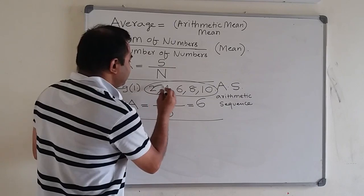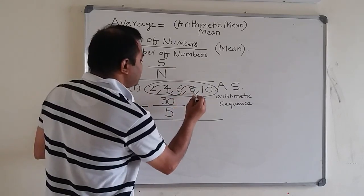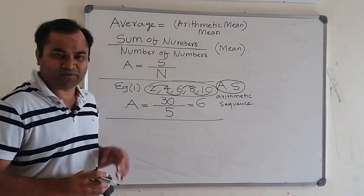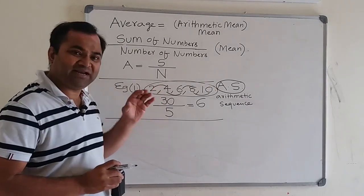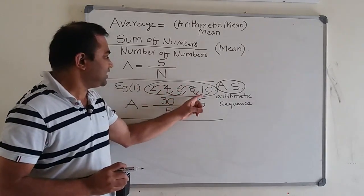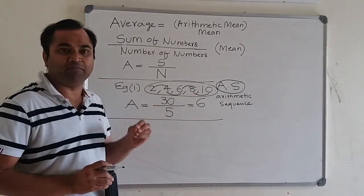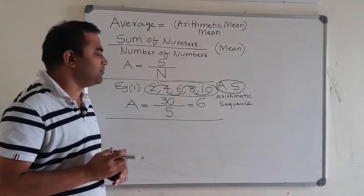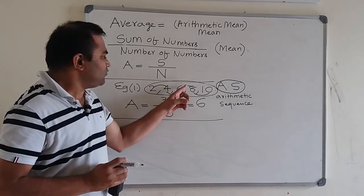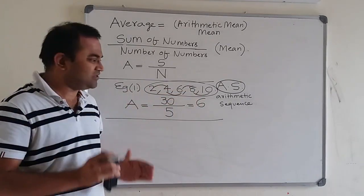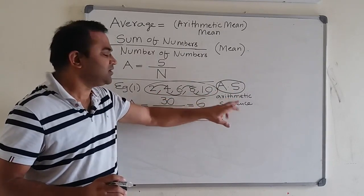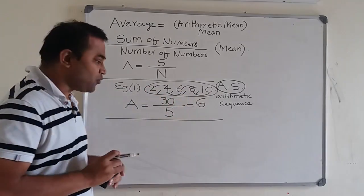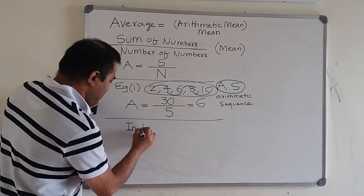When there is a constant difference between any two consecutive numbers, the numbers are said to form an arithmetic sequence. Consecutive, or successive, numbers are numbers coming immediately next to each other. If there is the same difference between any two consecutive numbers, then the numbers form the pattern called arithmetic sequence.